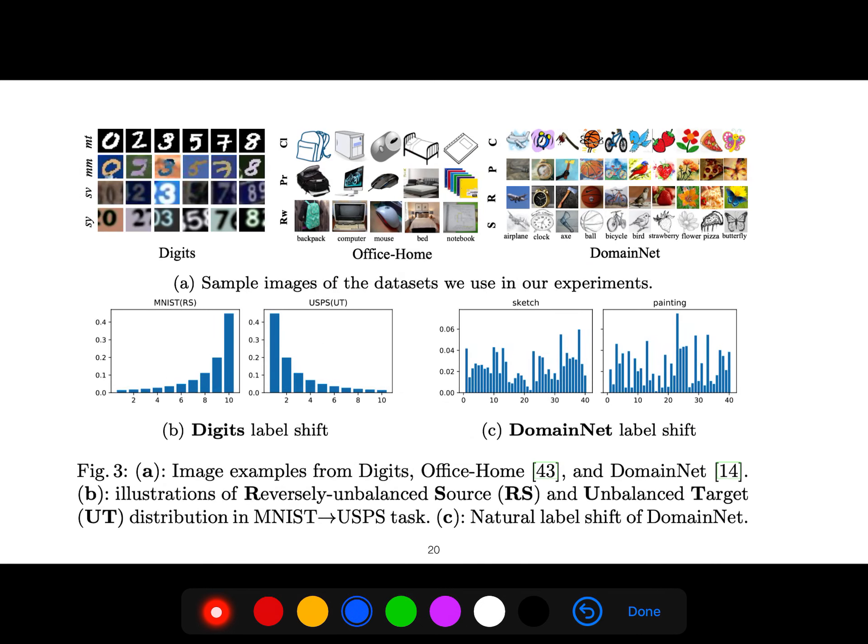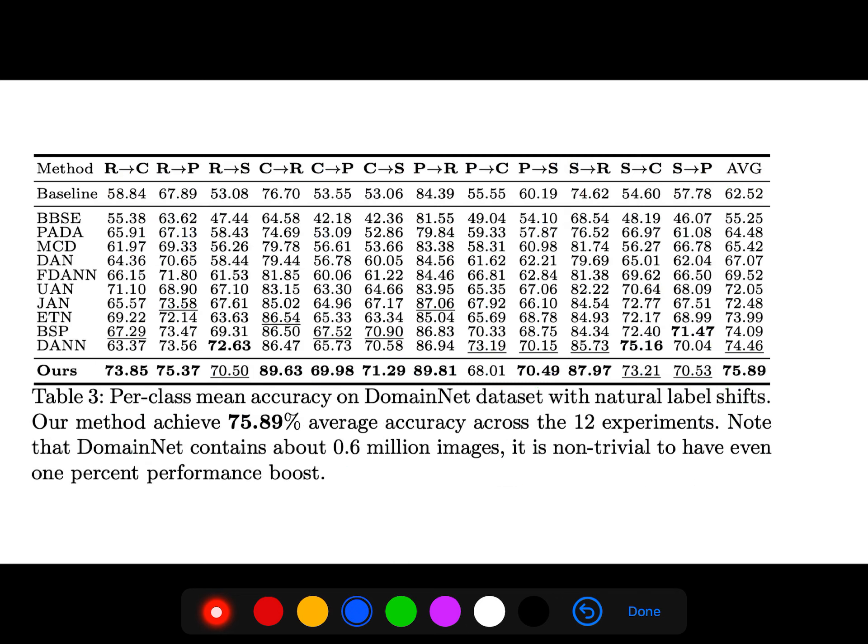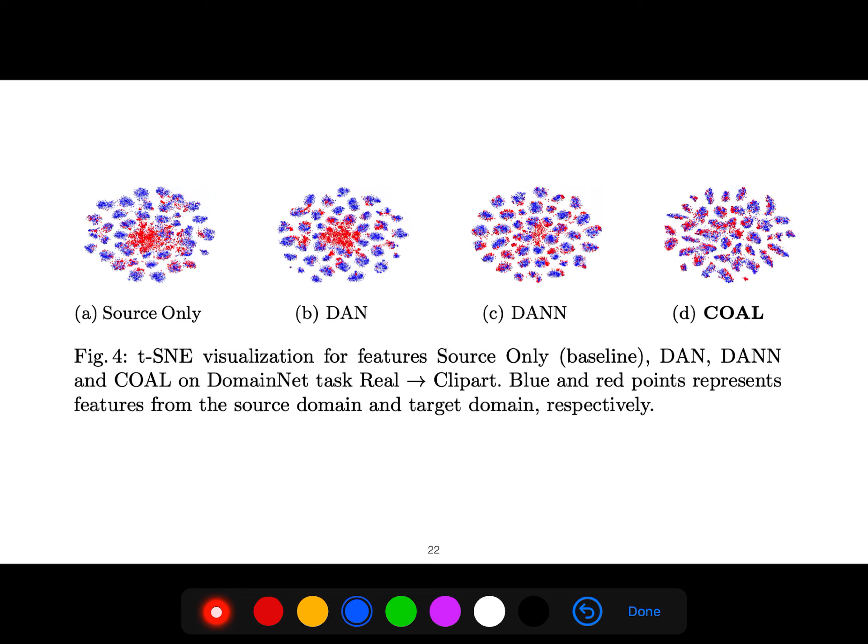And these are the digits label shift, you see, and also domain net label shift. And you have different datasets: office, home, domain net. When you go from one source to the other target, for the baseline, you see this accuracy, which is 53, for example, for this source and this target. But this paper shows that, you see, it's 20% improvement.